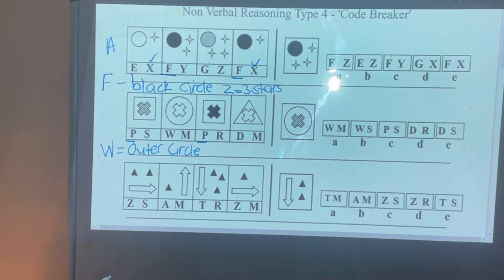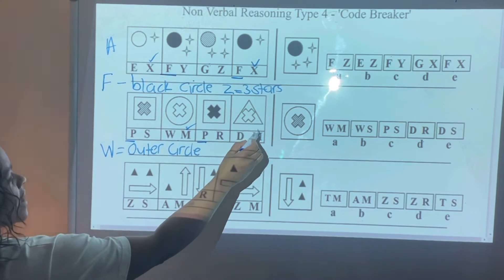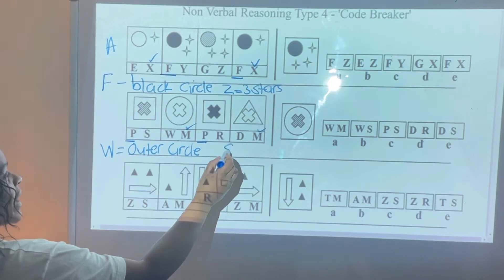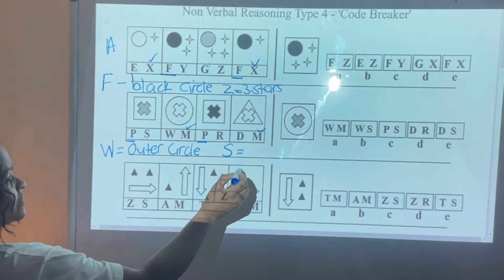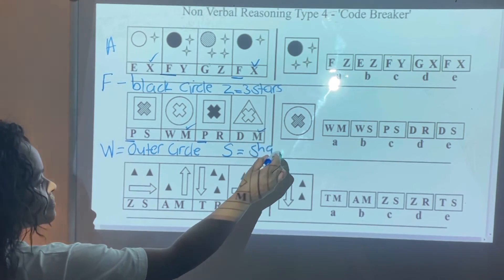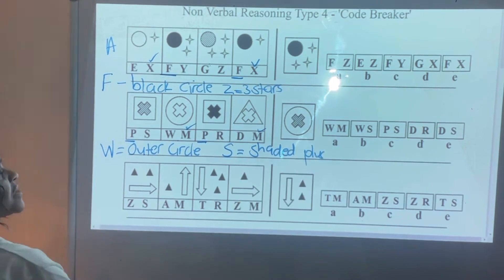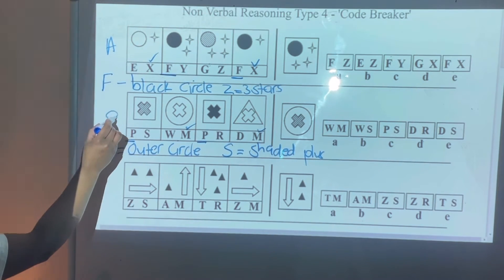Now let's move to the next letter. We have an M there and an M there as the second letter. M and M — it means the star is unshaded. The one I'm looking for is shaded and striped, which means the second letter would be S. So S means shaded — a shaded plus striped pattern, which is the same shading. My answer here will be WS, which is B.